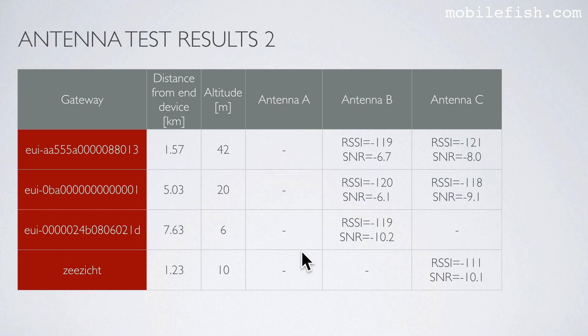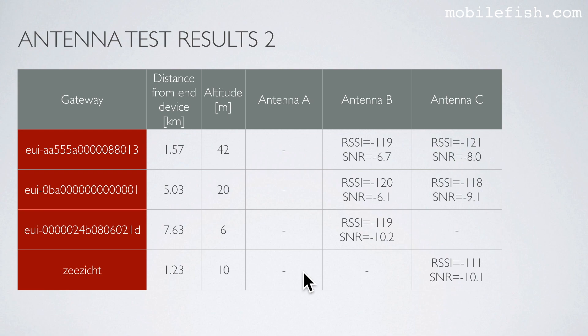As you can see there are no values for antenna A because the end device was not able to join any gateway — this is the bad antenna. Antenna B is the good antenna and antenna C is the excellent antenna. Unfortunately in this demonstration I cannot show just by looking at the RSSI and SNR values why antenna C is a very well-optimized antenna.